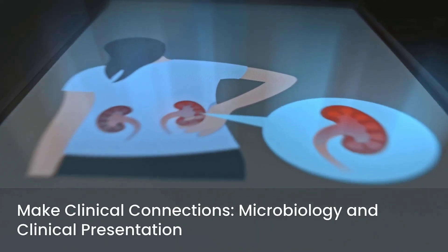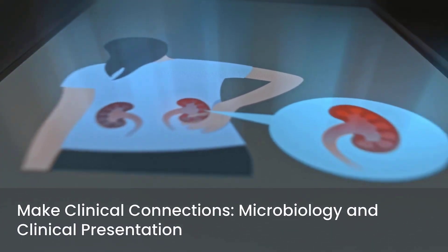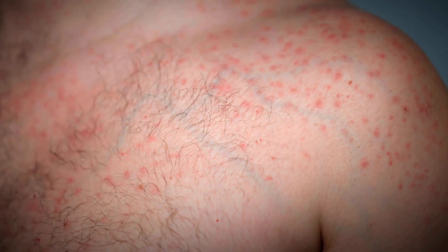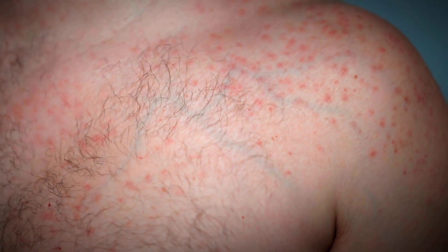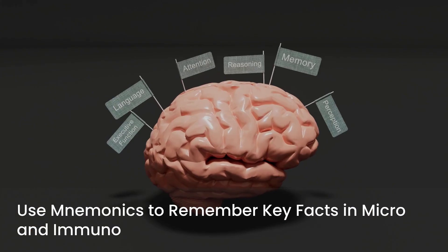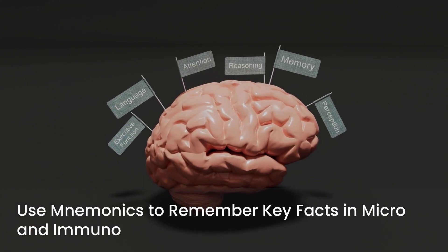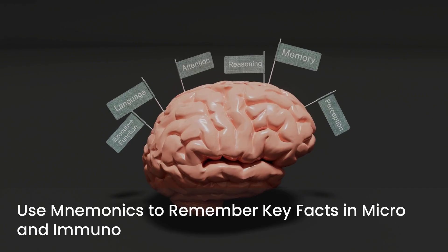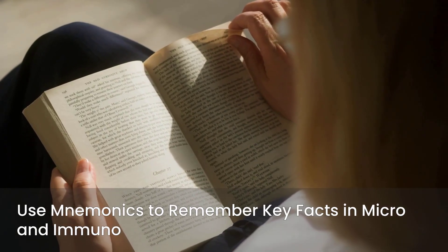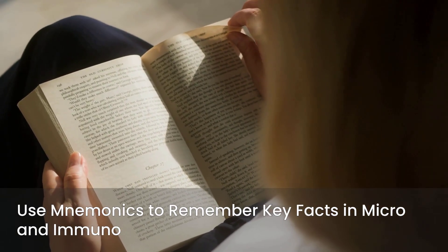This makes the information more memorable and relevant. Understand how organisms cause disease — this goes beyond just memorizing symptoms. Think about the virulence factors, toxins, and host immune response. Finally, employ mnemonics for remembering key facts. Micro and immunology are full of lists and details, and mnemonics can be lifesavers. Create your own or use popular ones that resonate with you.